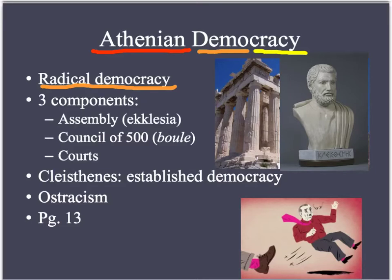Now, I have to back up here — this is not all people. It excludes women, non-Athenian citizens like foreigners, children, and some people could have their right to vote taken away. You had to be a male citizen that had served in the army and was at least 30 years old. So it does limit it a bit. But coming from systems of oligarchies, aristocracies, and tyrannies, this is quite an advance.